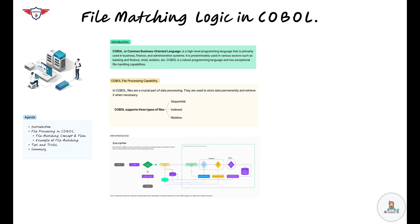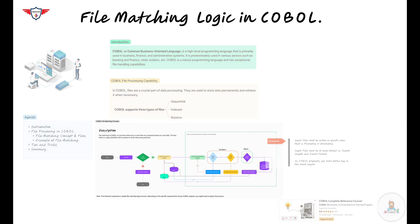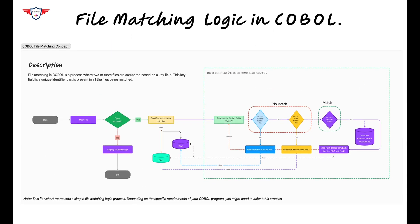Now let's move on to file matching in COBOL. File matching in COBOL is used when we need to combine two or more files based on a common key field. It is like merging two lists based on a common element, and this is particularly useful when you're dealing with large data sets. The process involves reading records from each file, comparing the key fields, and then writing the matched records to an output file.